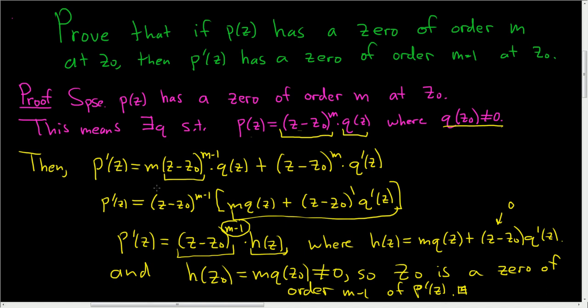And then compute the derivative and rewrite it in a form to show that z naught is a zero of order m minus 1 for p prime. I hope this helps.